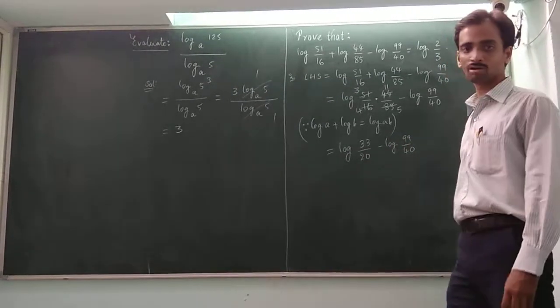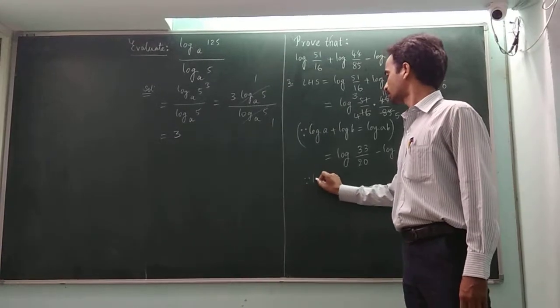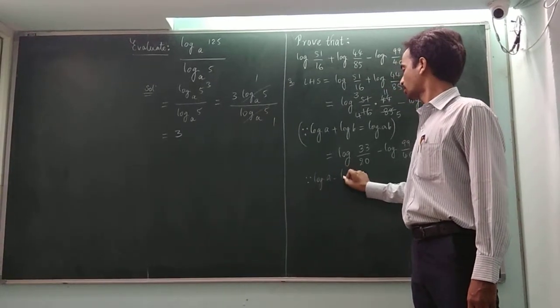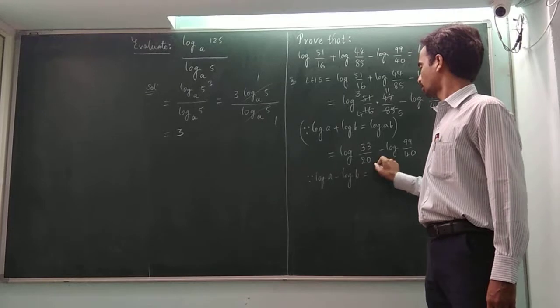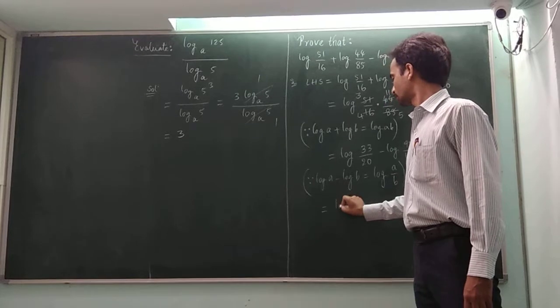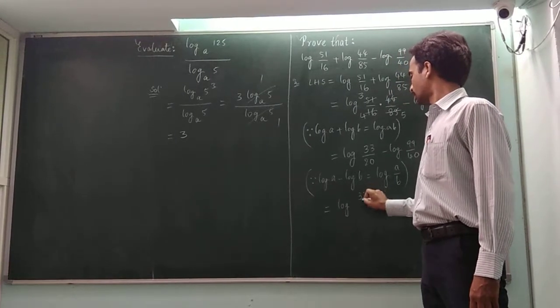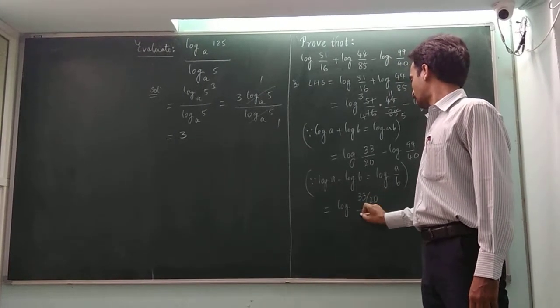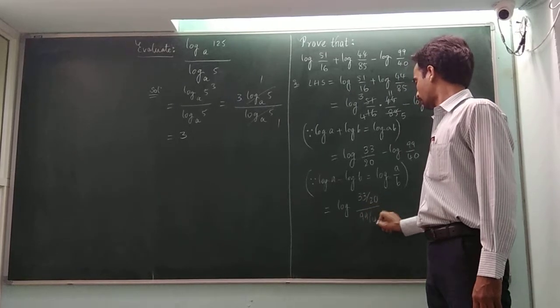Log A minus log B form. Since log A minus log B is equal to log A by B, this is equal to log 33 by 20 divided by 99 by 40.